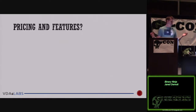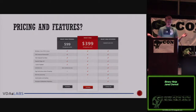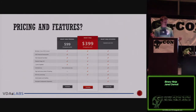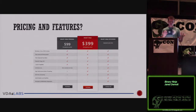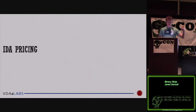One of the first things people want to know is: what does it cost? The Binary Ninja model is pretty straightforward — there's a demo for free, a $99 personal license, and a $400 professional license. That's quite a bit cheaper than IDA. I may shorten Binary Ninja to BINJA or BN throughout this talk.